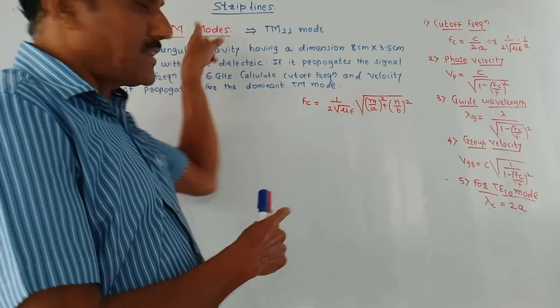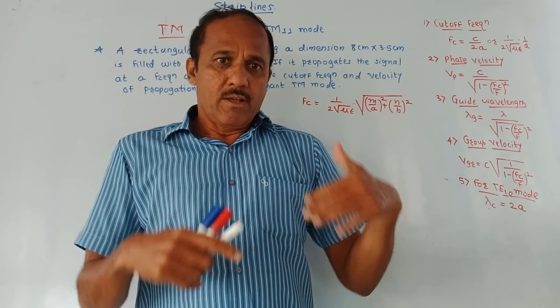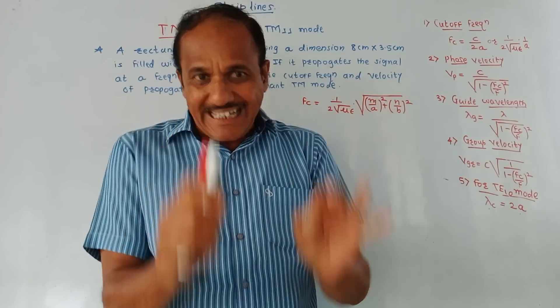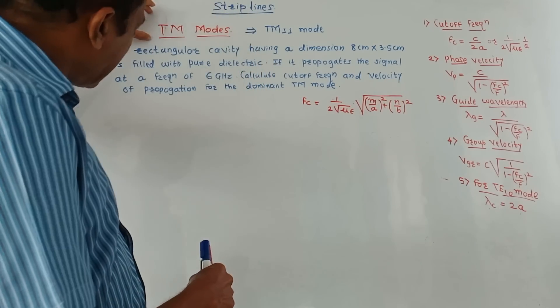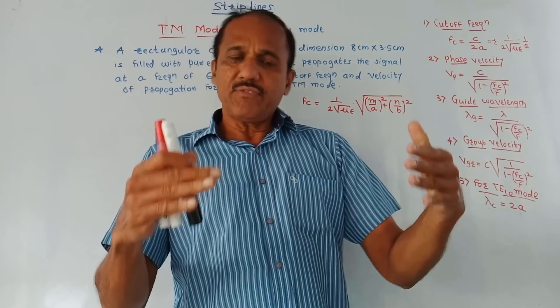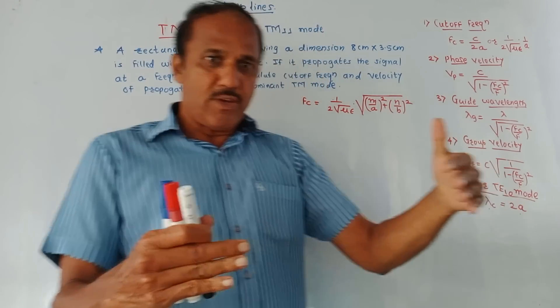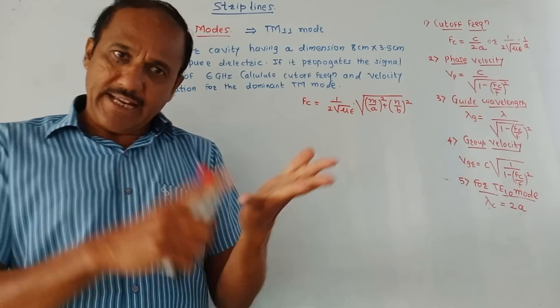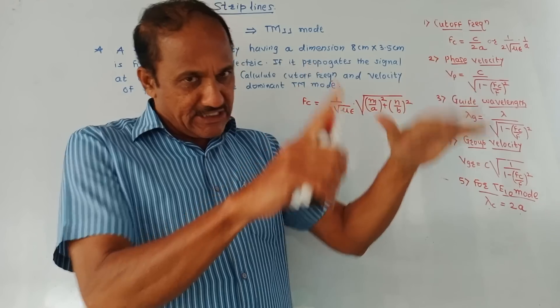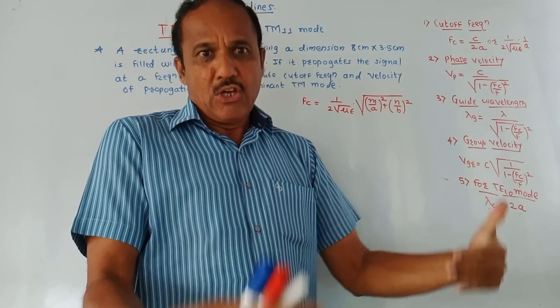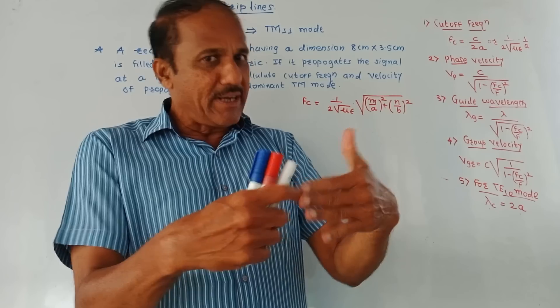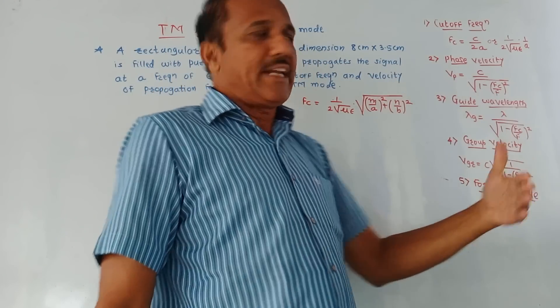TEM stands for transverse electromagnetic mode. In the last video, we discussed TE modes that was transverse electric mode. Now the remaining mode is TEM mode. This is transverse magnetic mode. That means if the direction of propagation of wave is along Z, then its magnetic component cannot be along Z direction because it is transverse direction. So the direction of magnetic component will be transverse, that is perpendicular to the Z direction.